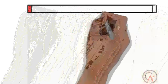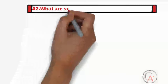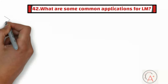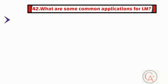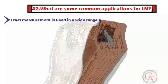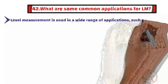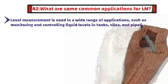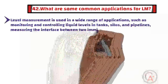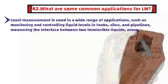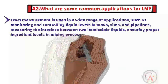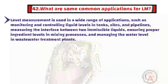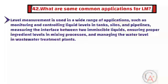Question forty-two is: what are some common applications for level measurement? Level measurement is used in a wide range of applications such as monitoring and controlling liquid levels in tanks, silos, and pipelines, measuring the interface between two immiscible liquids, ensuring proper ingredient levels in mixing processes, and managing the water level in wastewater treatment plants.